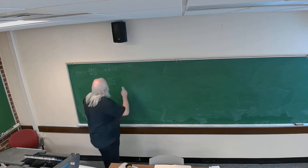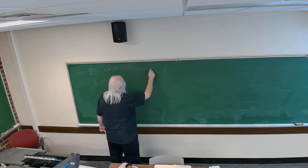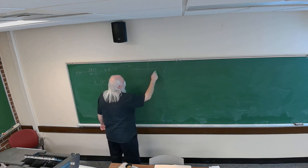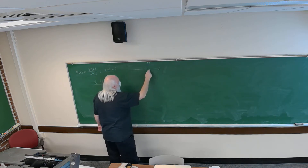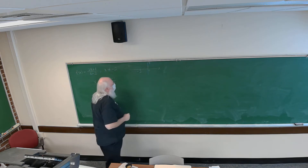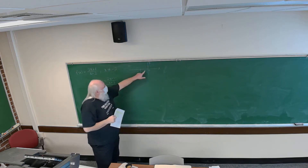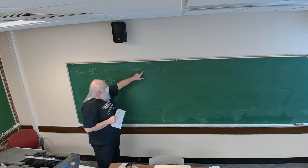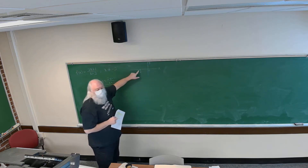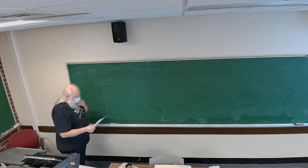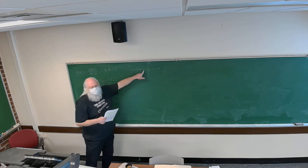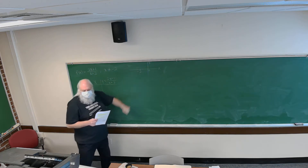Here's the coordinate plane with the origin, and here's minus 2 on the x-axis. We're going to look at what the graph looks like to the right of x equals minus 2, and what it looks like to the left of x equals minus 2. We'll start with the graph to the right of x equals minus 2.